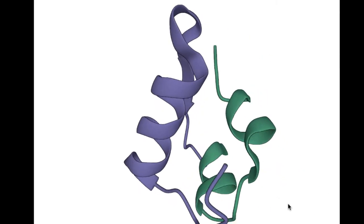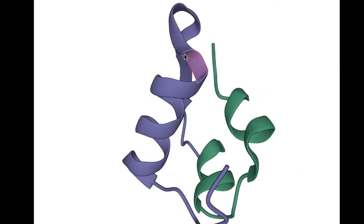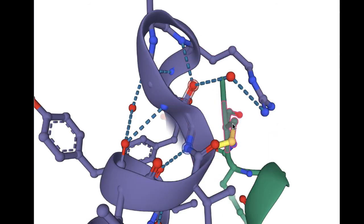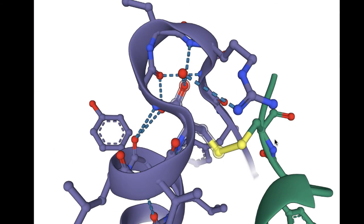To identify a disulfide bond in a protein, examine the neighborhood of cysteine amino acids. If there is another cysteine close by, they probably form a disulfide bond.